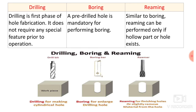The next point — drilling is the first phase of hole fabrication. It does not require any special feature prior to the operation. Initially you will have a solid material and then you can drill a hole inside it with the help of a drill bit. You can perform a centering operation before drilling to get a precise location, but that is not compulsory. Drilling is the start of the machining process and does not require any special feature prior to operation.